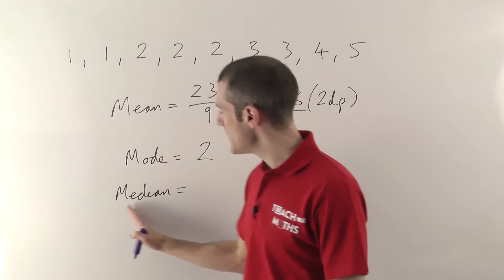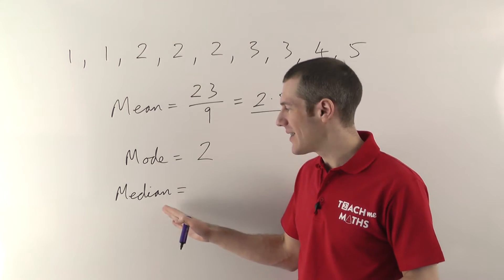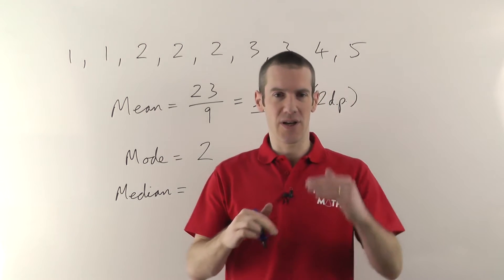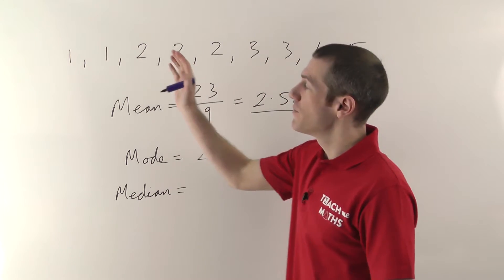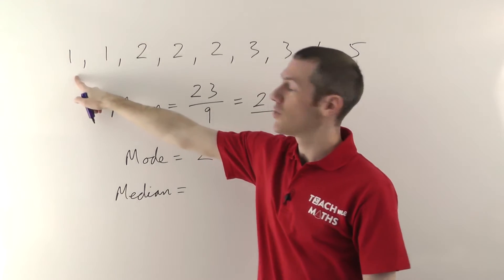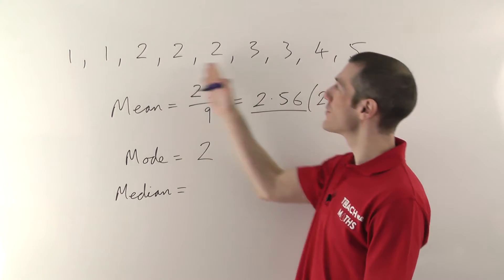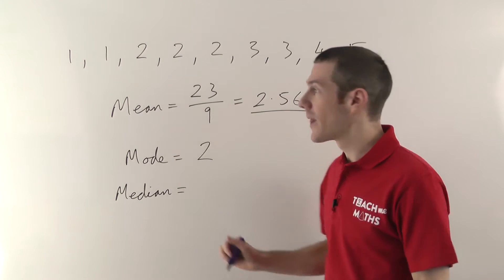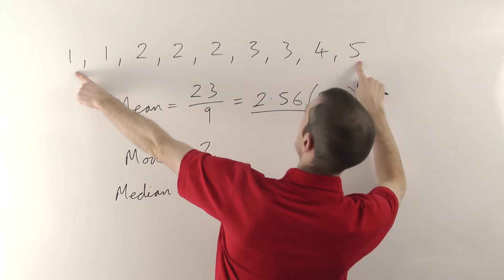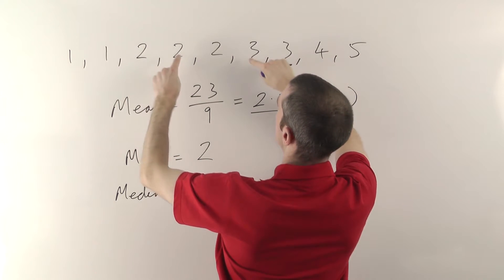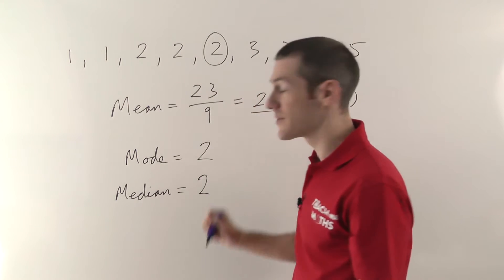Finally, the median. Be careful — it's 'median' with an N, not 'medium,' though the similarity helps: medium means middle, and the median is the one in the middle. You must first put all your numbers in order from smallest to largest — if you don't, you get the wrong answer. Then just pair your way in from the outside, and the number left in the middle is the median.